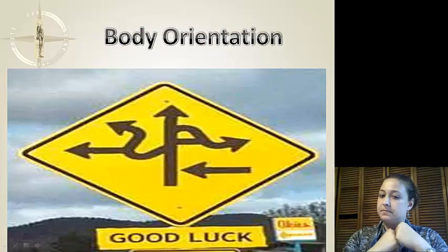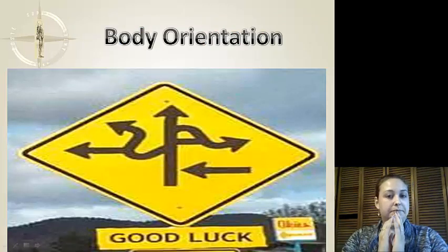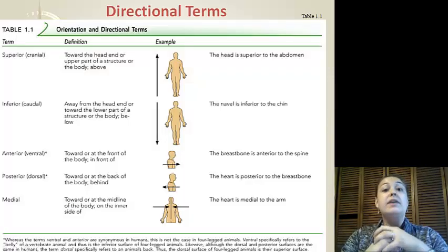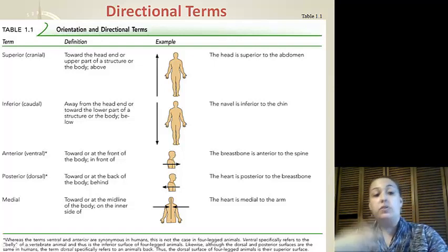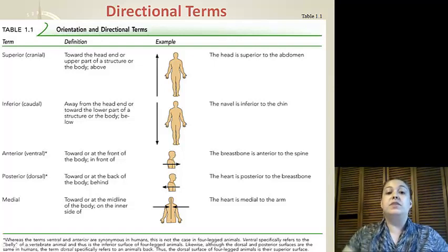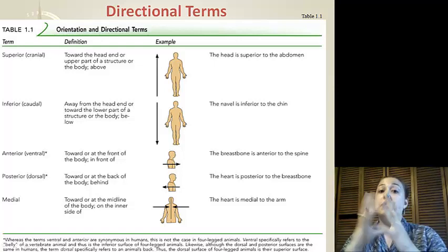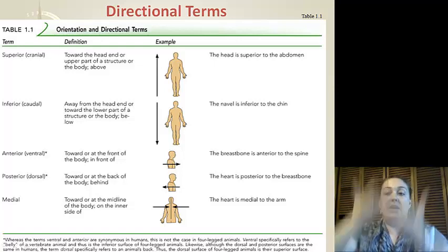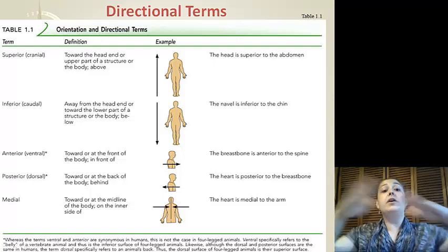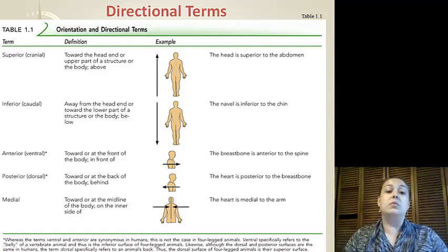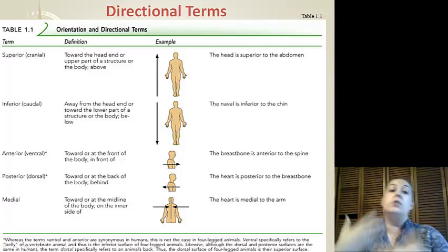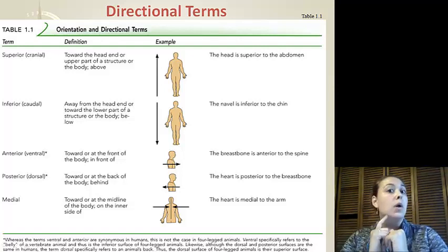Body organization and terminology. Okay, we're first going to start with directional terms. What does superior mean? Or cranial? It means moving towards the head or towards the upper structures of the body — above. Inferior is the opposite: inferior or caudal means below, moving away from the head or towards the lower part of the structures.